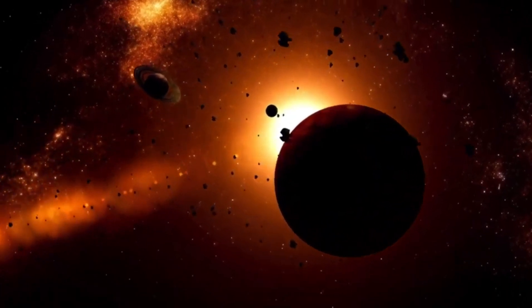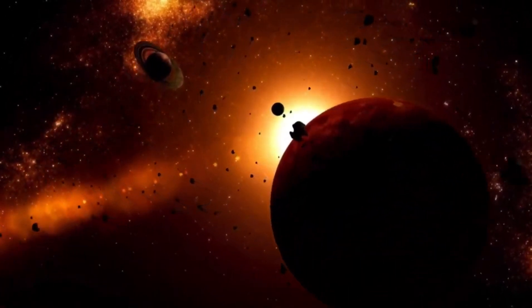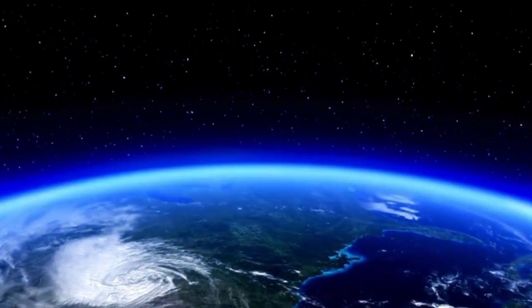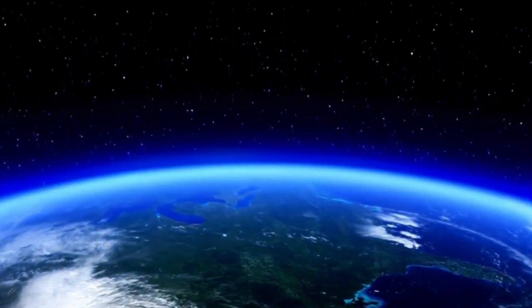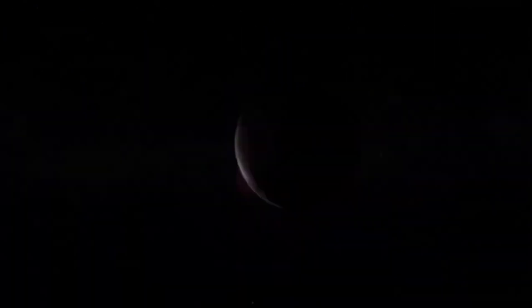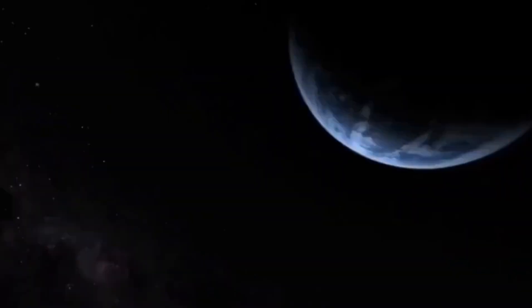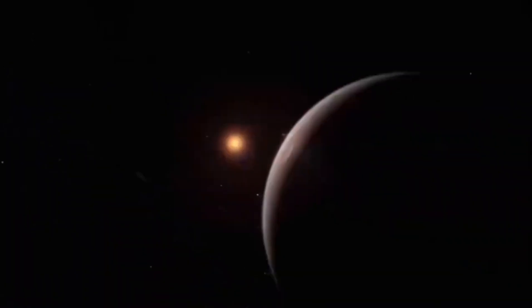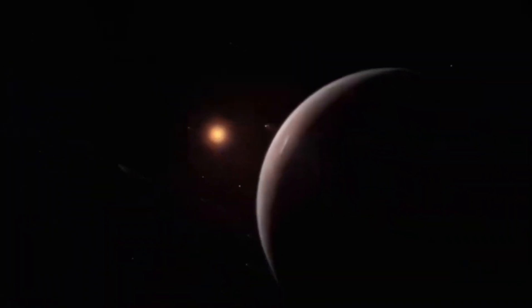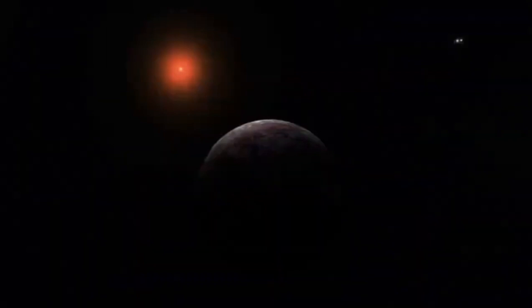This incredible mission takes us far beyond the familiar reaches of our solar system into the vastness of space where extraordinary worlds exist, orbiting distant stars and challenging our understanding of habitability. Proxima b stands out among these fascinating exoplanets due to its Earth-like characteristics. Unlike ordinary barren celestial rocks, Proxima b is situated just 4.2 light years from Earth, making it one of the closest exoplanets to our solar system.